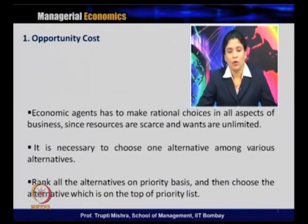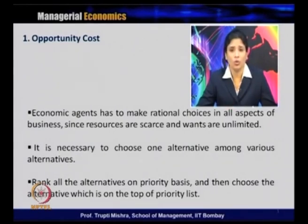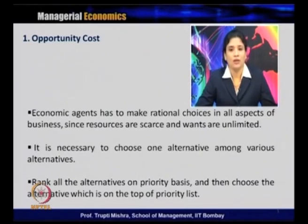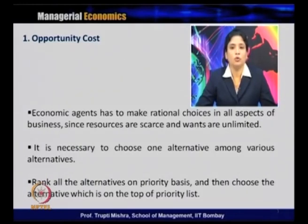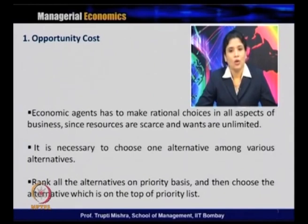Since there is a gap, all economic agents — whether a consumer, a producer, an investor, or the economy as a whole — have to make a rational choice in all aspects of business, simply because resources are scarce and wants are unlimited. Since they have to make choices among alternatives, it is necessary to choose one alternative among various alternatives. They rank all the alternatives on a priority basis, then choose the one at the top of the priority list.